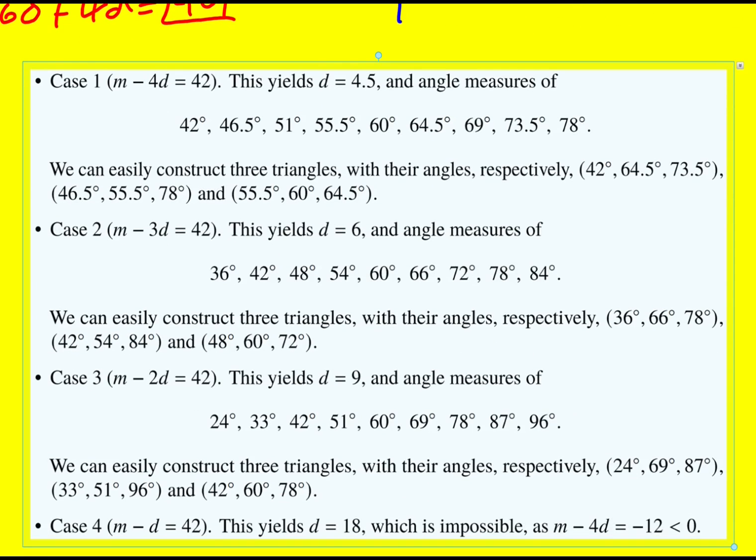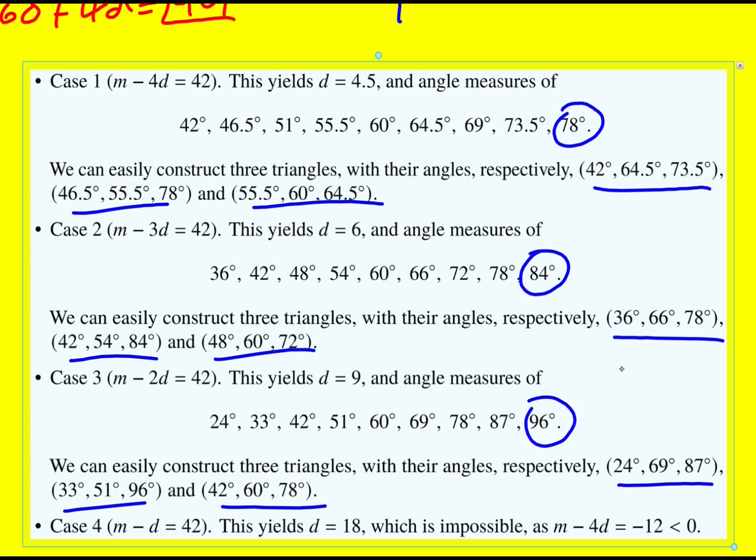But with 4.5, we get these, and then they wrote down possible triangles. Case two, we get d is six. Again, we found these. And then case three with d equals nine, we found these. I just wanted to share them as those are some possible constructions with the largest angles also shown. All right, well done.